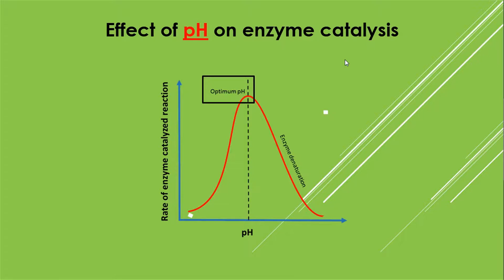For example, pepsin which works in the stomach is active at acidic pH from 2 to 3.5, while trypsin enzyme which is present in small intestine is active at alkaline pH which ranges from 6 to 8.